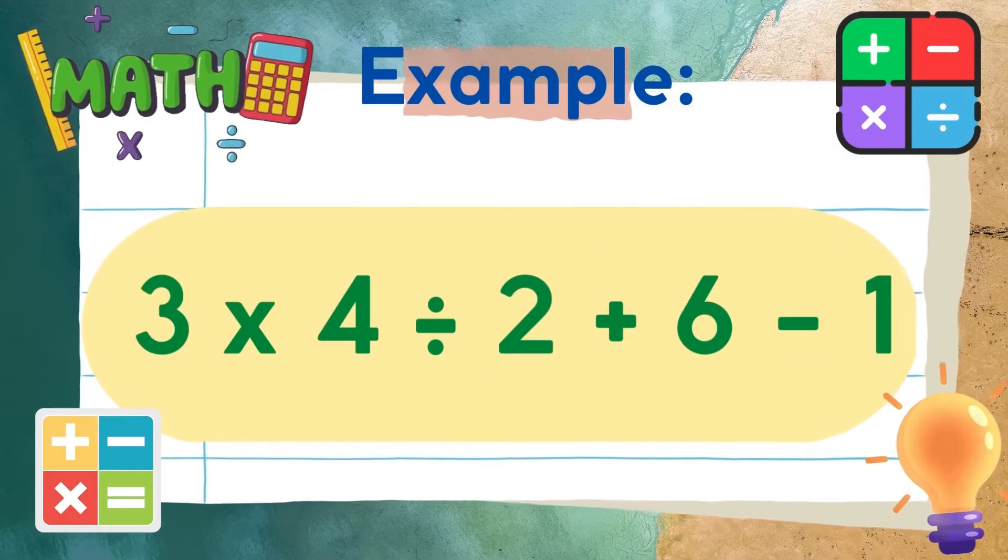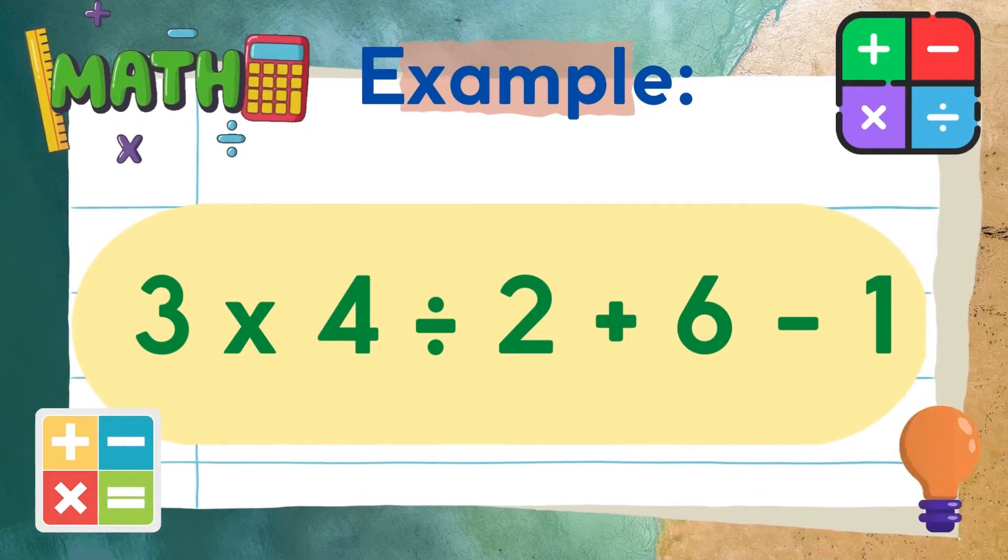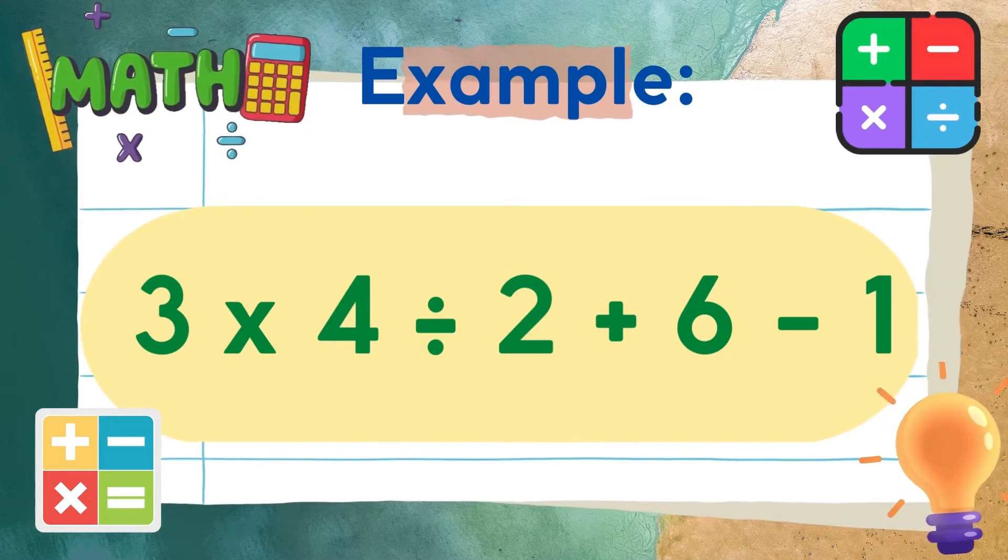Let's have this example: 3 times 4 divided by 2 plus 6 minus 1.